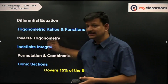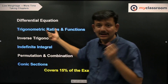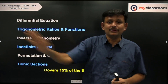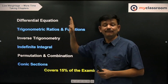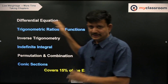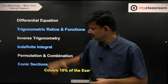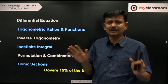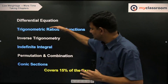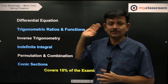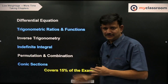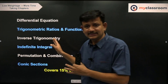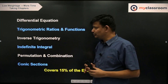Towards the end, do Differential Equations — regular questions are asked on variable separable method and linear differential equations. If you do not have time for the full chapter, focus on just those two methods. Trigonometric Ratios and Functions can be your last chapter — simply revise all the formulae and do standard archive questions only. For Inverse Trigonometry, it is an intensive topic to learn but simple questions are asked in JEE Main, so stick to archives.